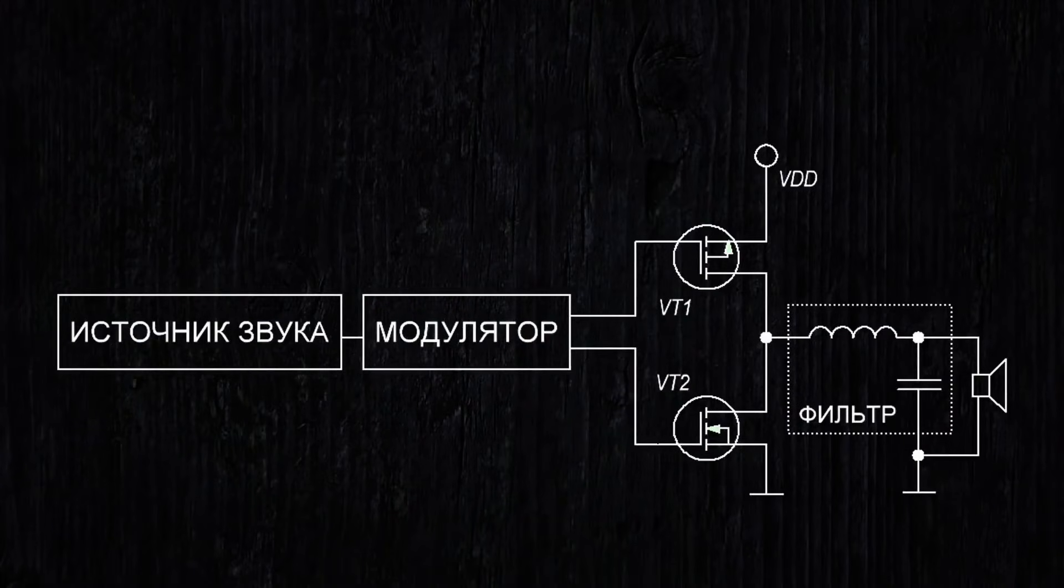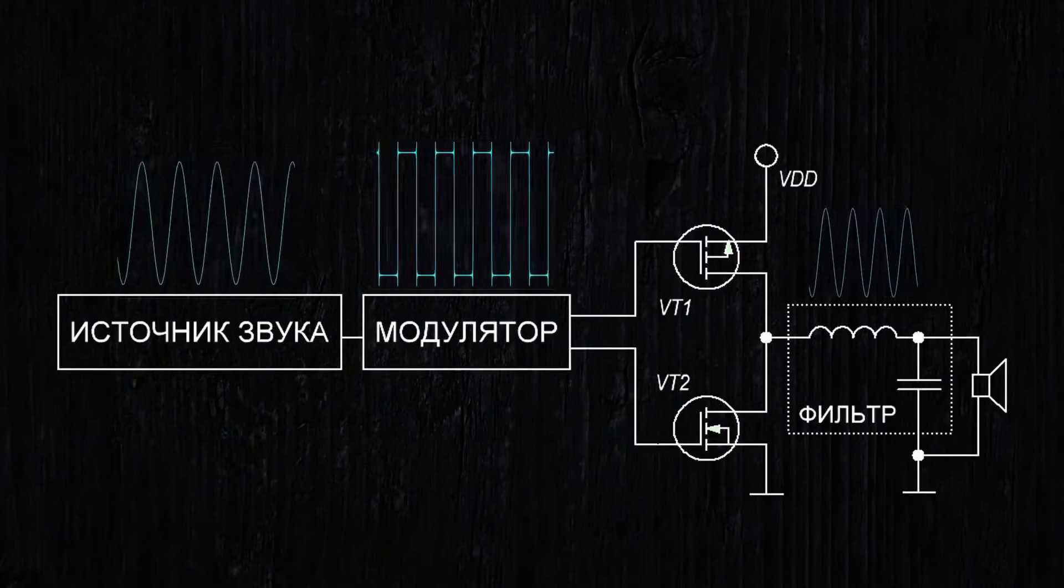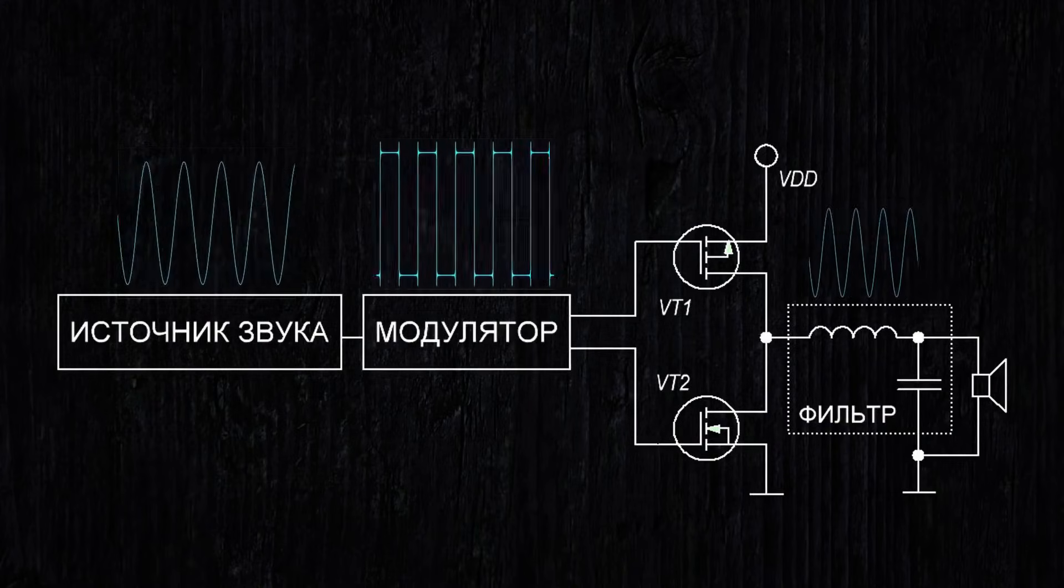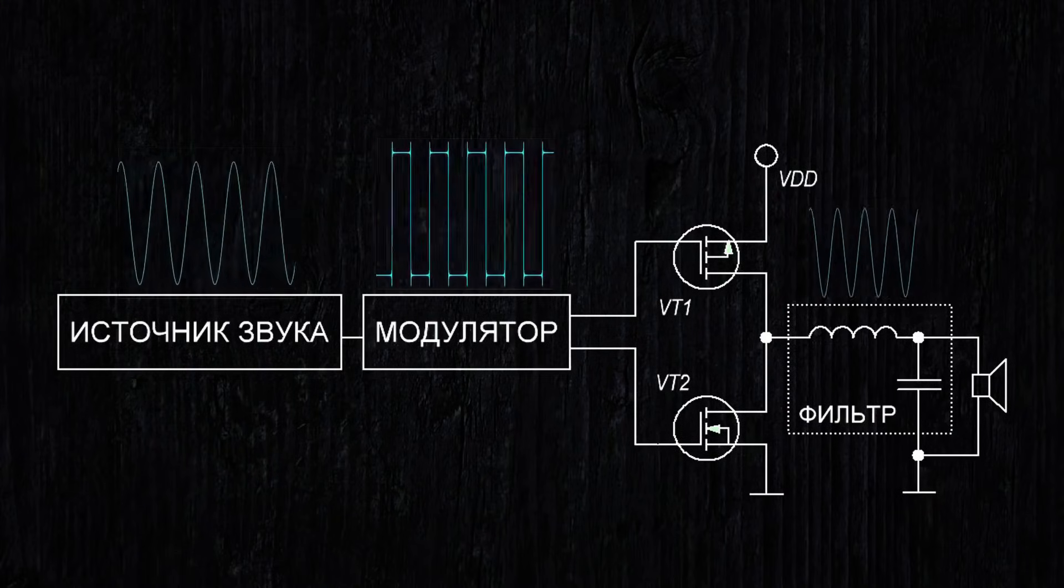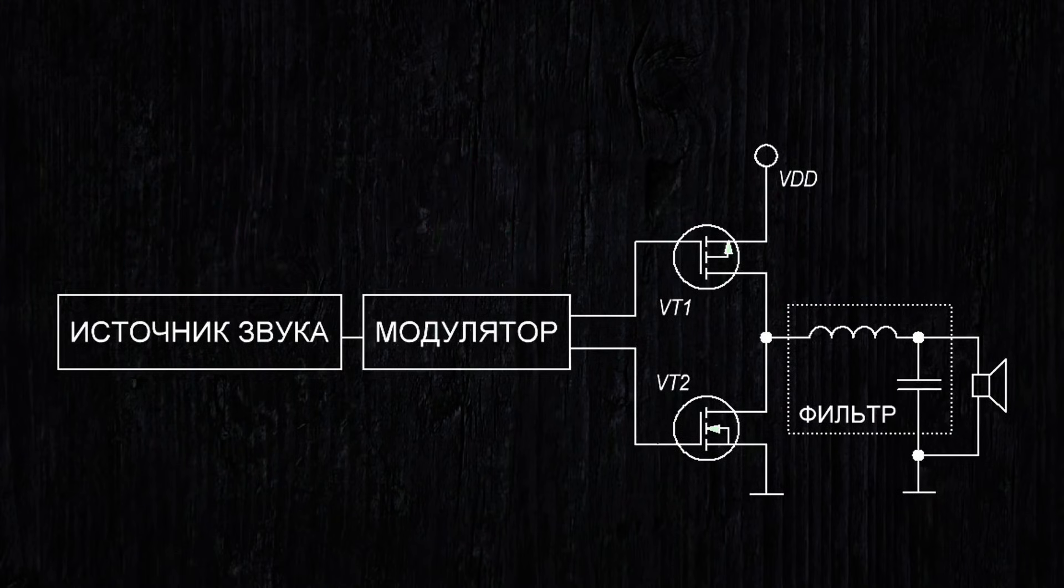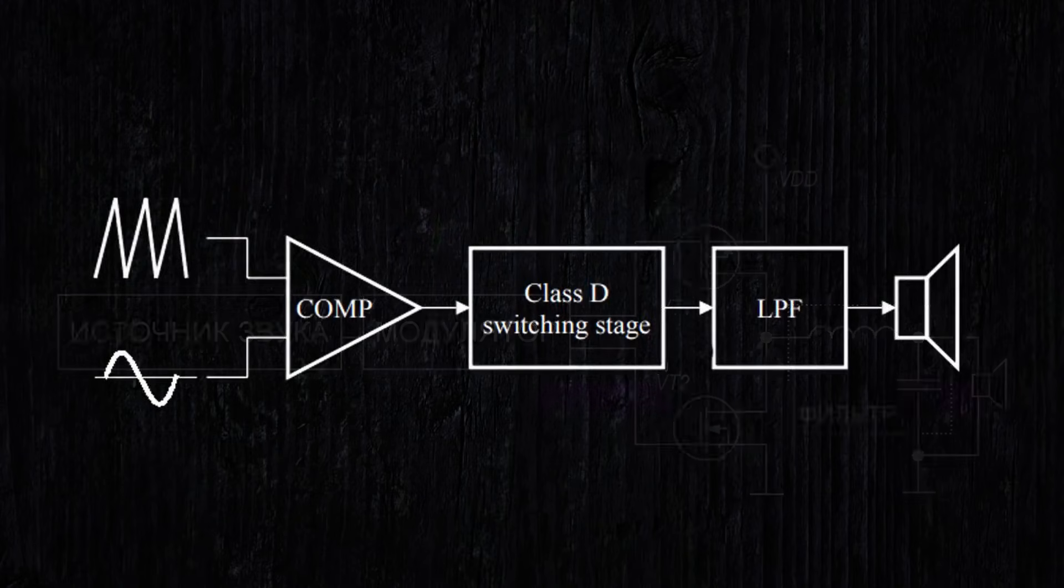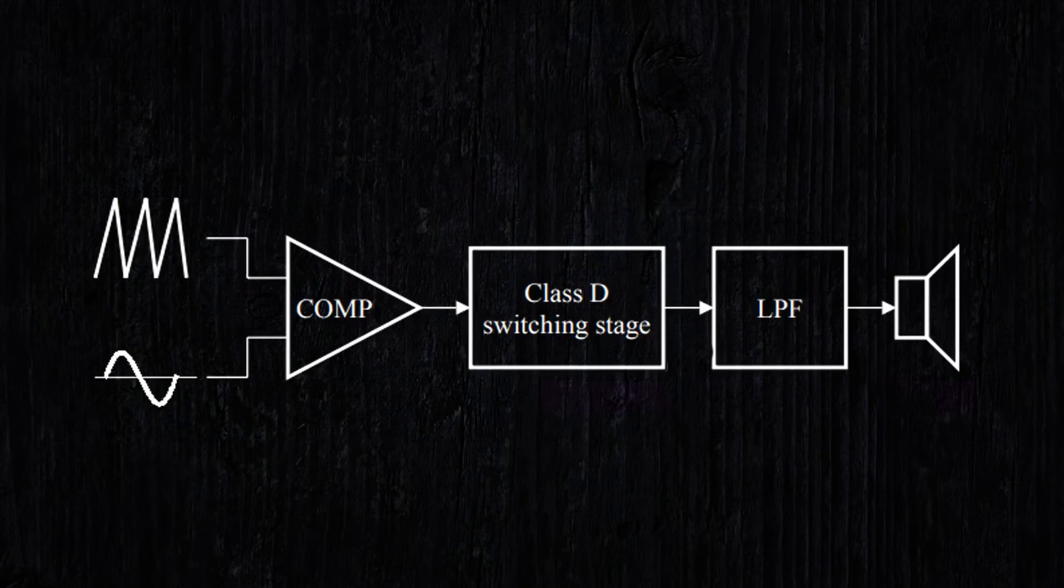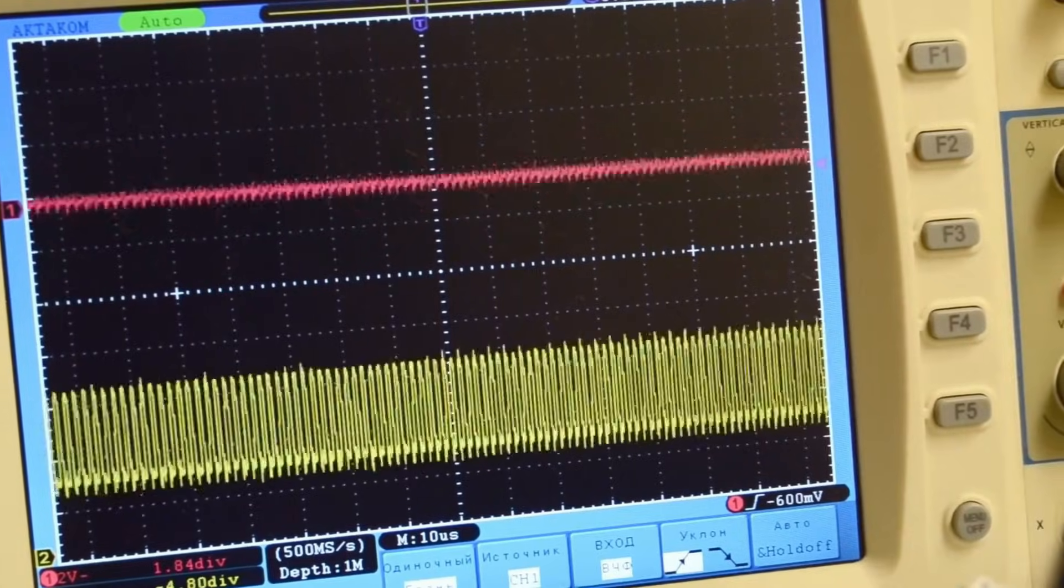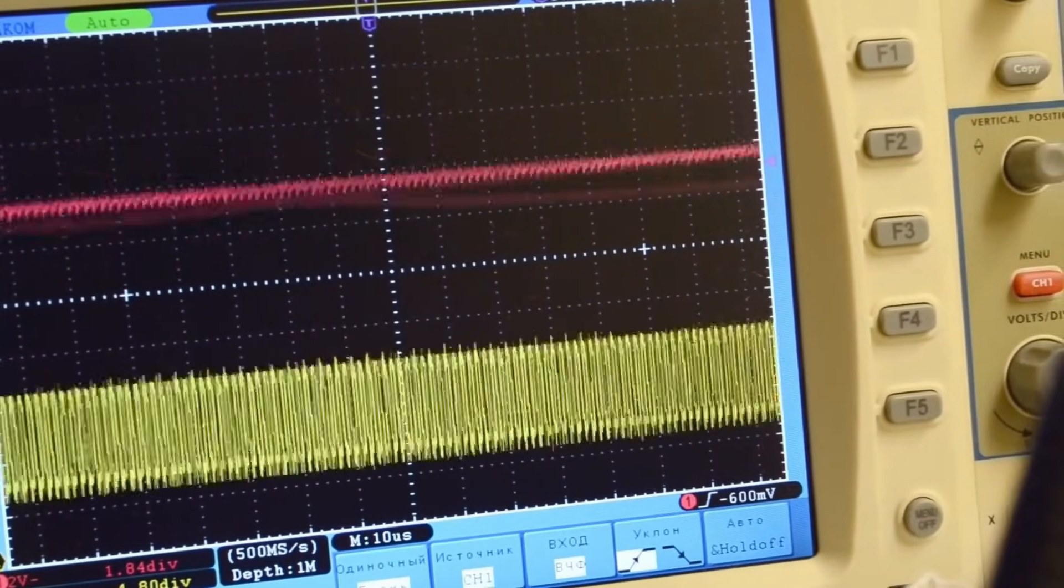Let's summarize. In a class D amplifier, the low-frequency signal is converted into a sequence of pulses that control the output stage of the field-effect transistors, which operate in switching mode and inject high-frequency pulses of energy into a reactive load, which acts as a filter suppressing high frequencies. At the output of the filter, the amplified low-frequency signal remains, which is then fed to the speakers.